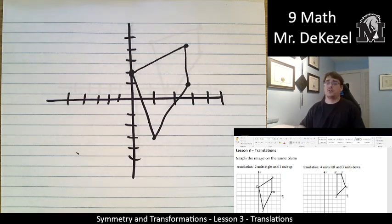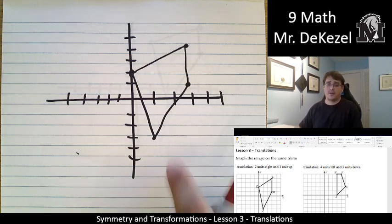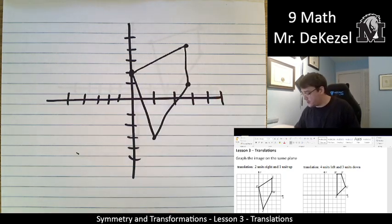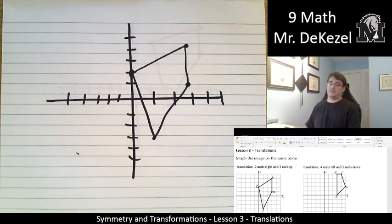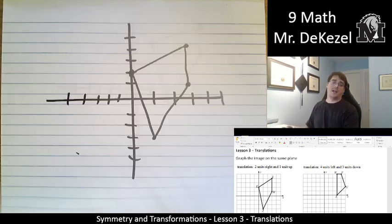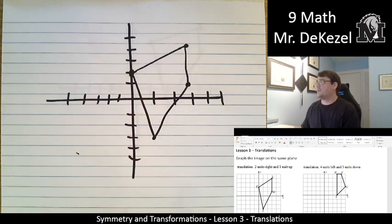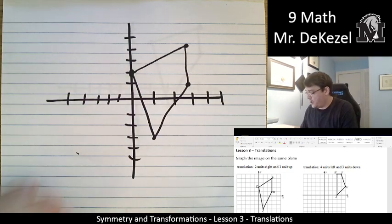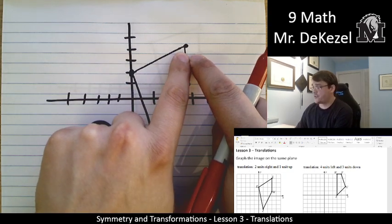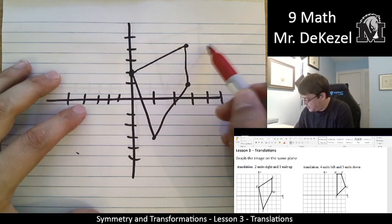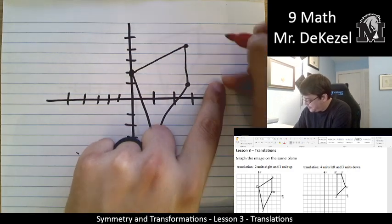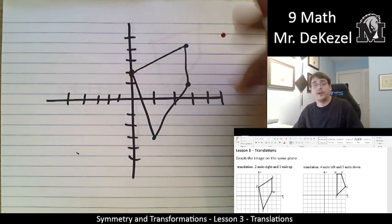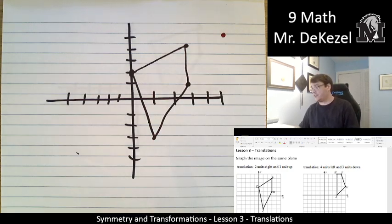I'm just going to do one point at a time. Ignore the shadow behind it. Let's do this one. So, translating two units to the right and one unit up. We're going to do point L first. We're going to go two units to the right, one, two, and one unit up. Right there. It's red. It's hopefully different enough for you to see.